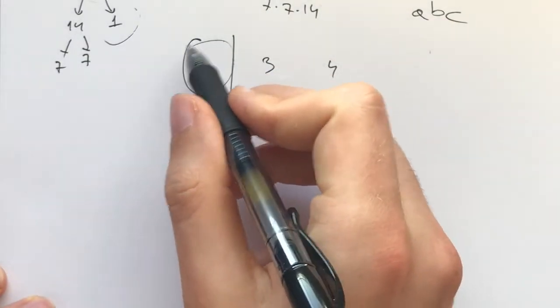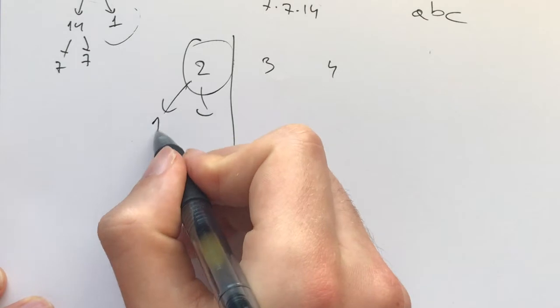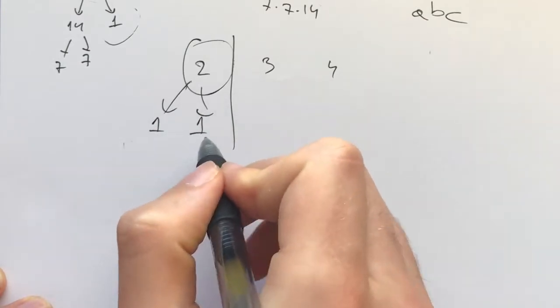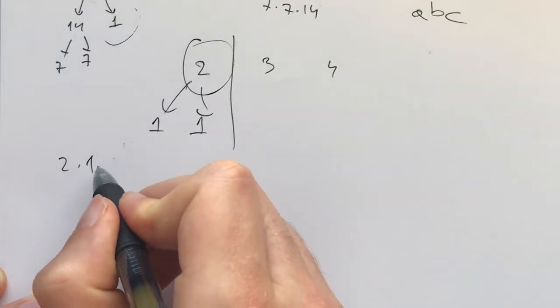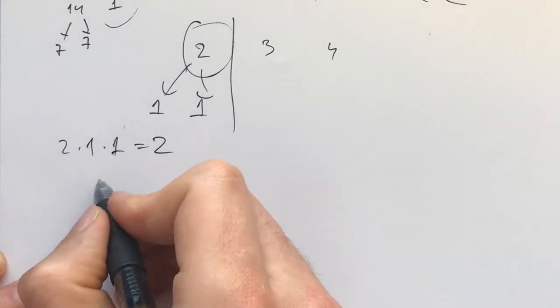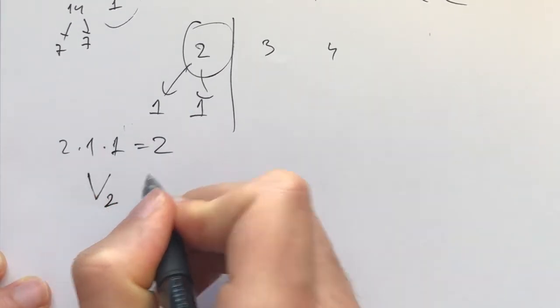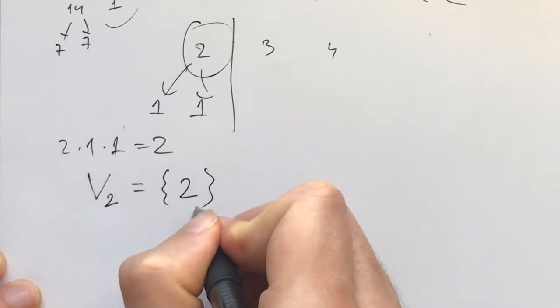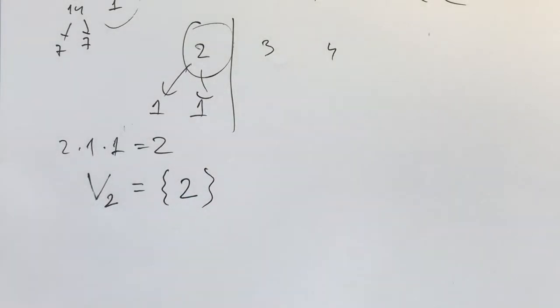So we have a pile with two coins, and we can only break them up into these groups of 1 and 1. What do we get? We get 2 times 1 times 1 on the board. So for 2, let's maybe call this a set of values, V of 2 is equal to the value 2. That's the only final product we can get.